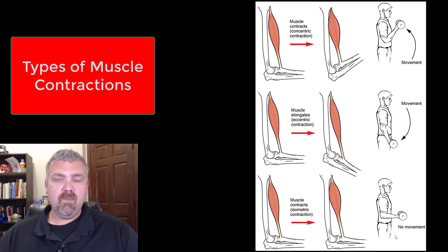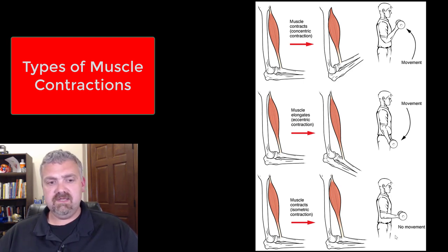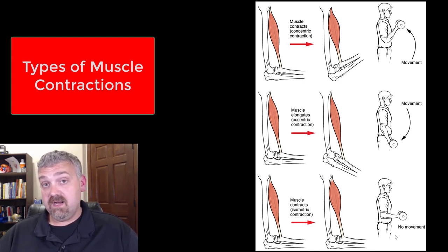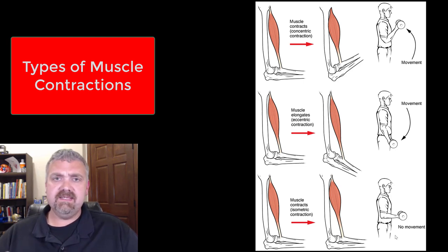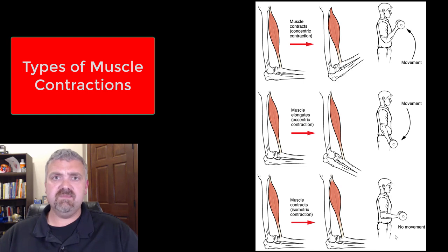All muscle contractions can be broken down into isometric, isotonic, and there is also something called isokinetic, but that takes specialized equipment like Cybex machines.